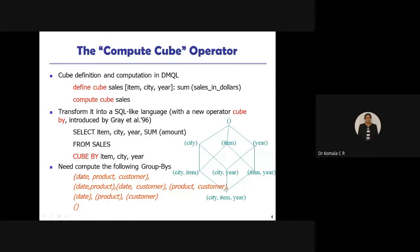Another example uses different dimension names: date, product, and customer instead of city, item, and year. At the apex, no names are specified. At the 1D level: date, product, customer individually. At the 2D level: date-product, date-customer, and product-customer are mapped. At the 3D level, all three — date, product, and customer — are combined. This shows how GROUP BY levels are defined from top to bottom.